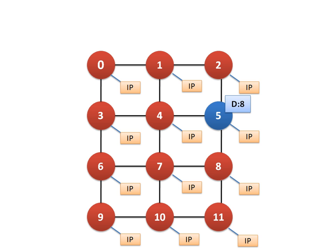So this is the drawback of XY routing. The advantage is its simplicity — it is very simple to implement. But the problem is that if there is any failure, it cannot handle it. So now we have some variations of XY routing. People have developed another routing based on XY.